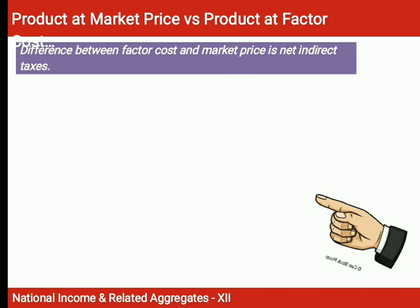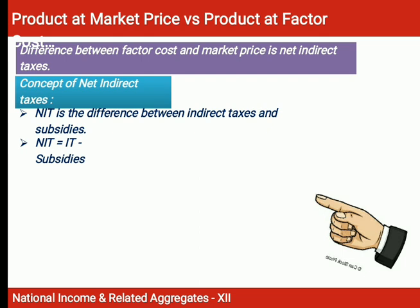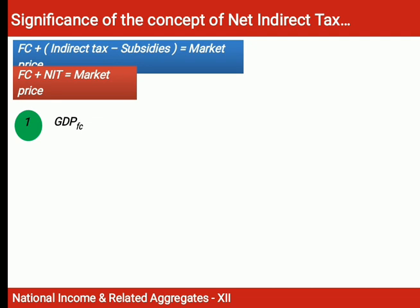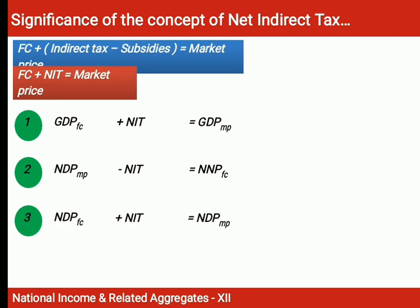The difference between factor cost and market price is net indirect taxes (NIT). NIT equals indirect taxes minus subsidies. Factor cost plus NIT equals market price. Key conversion formulas: GDP FC plus NIT equals GDP MP; NDP MP minus NIT equals NDP FC; NDP FC plus NIT equals NDP MP; and GNP MP minus NIT equals GNP FC. These are the most important formulas used in numerical problems.